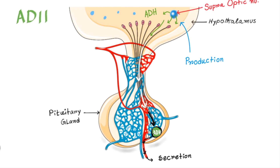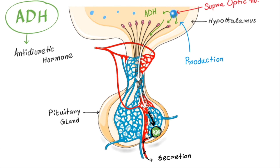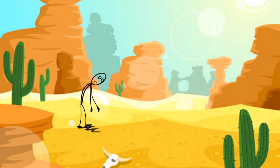ADH is anti-diuretic hormone, which means it doesn't allow diuresis or water loss. So it is a water conserving hormone. Now what circumstances require you to conserve water? When your blood or extracellular water is hyperosmolar.